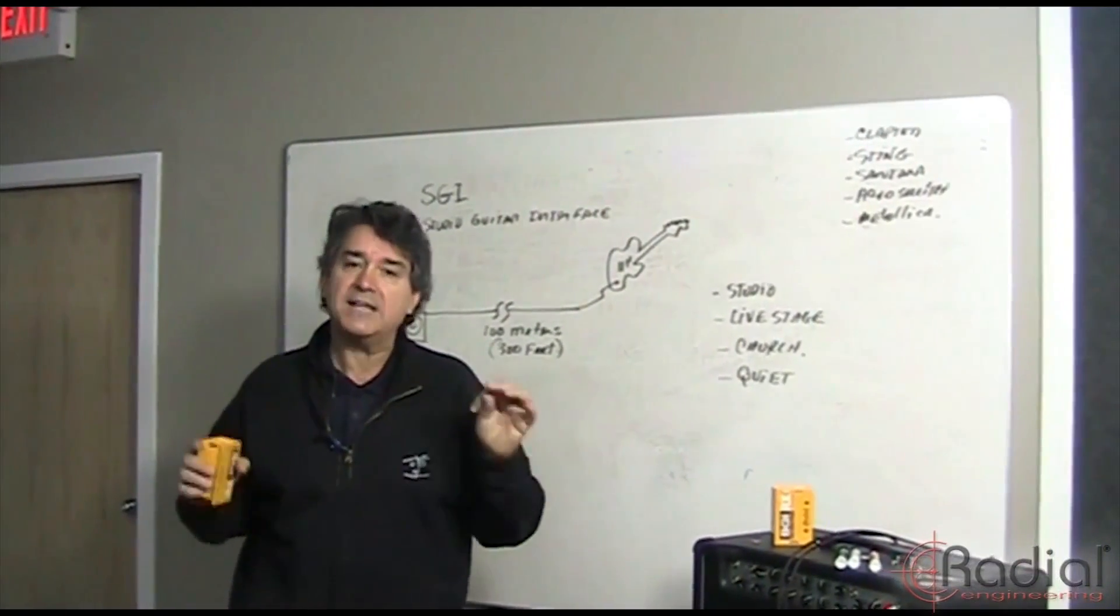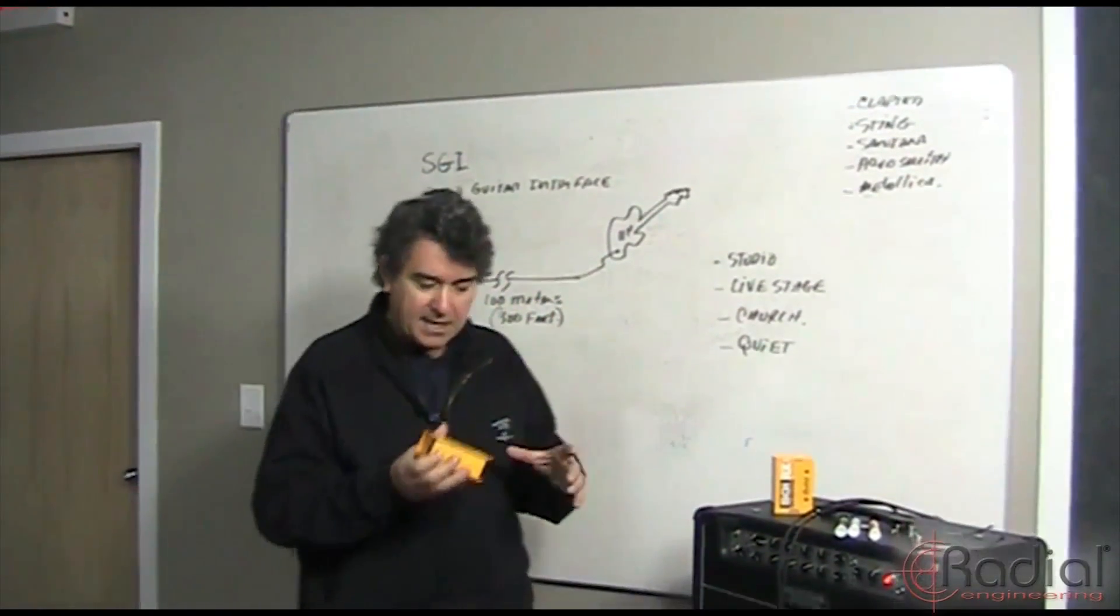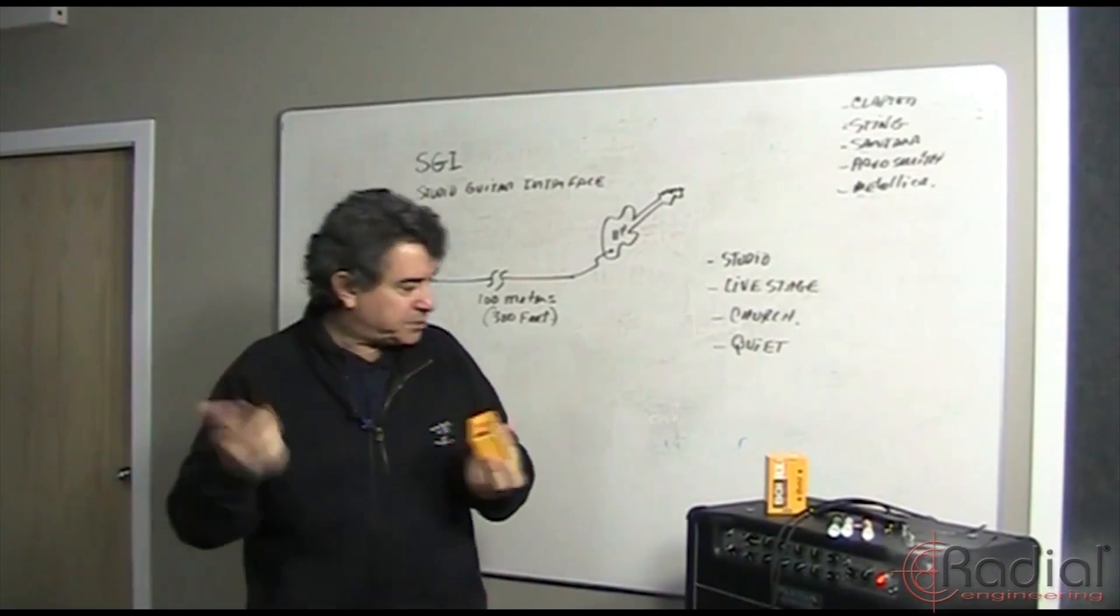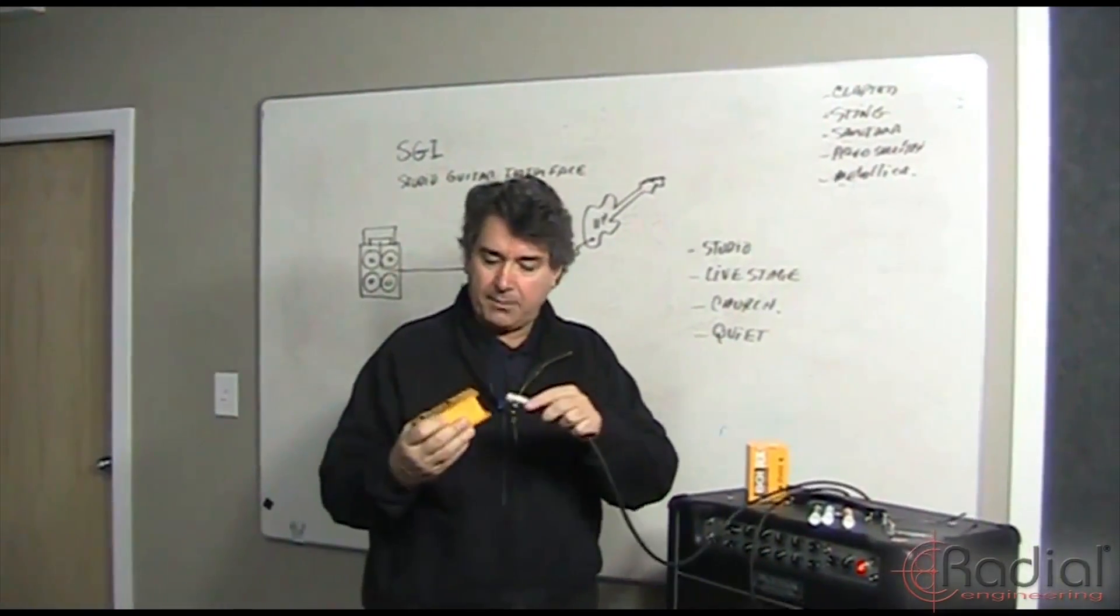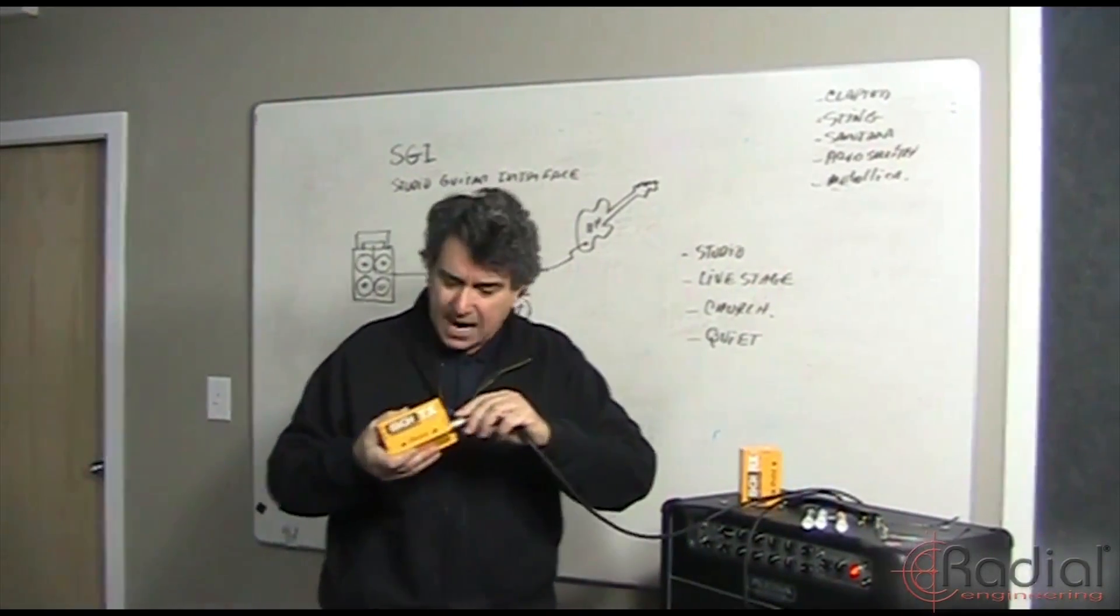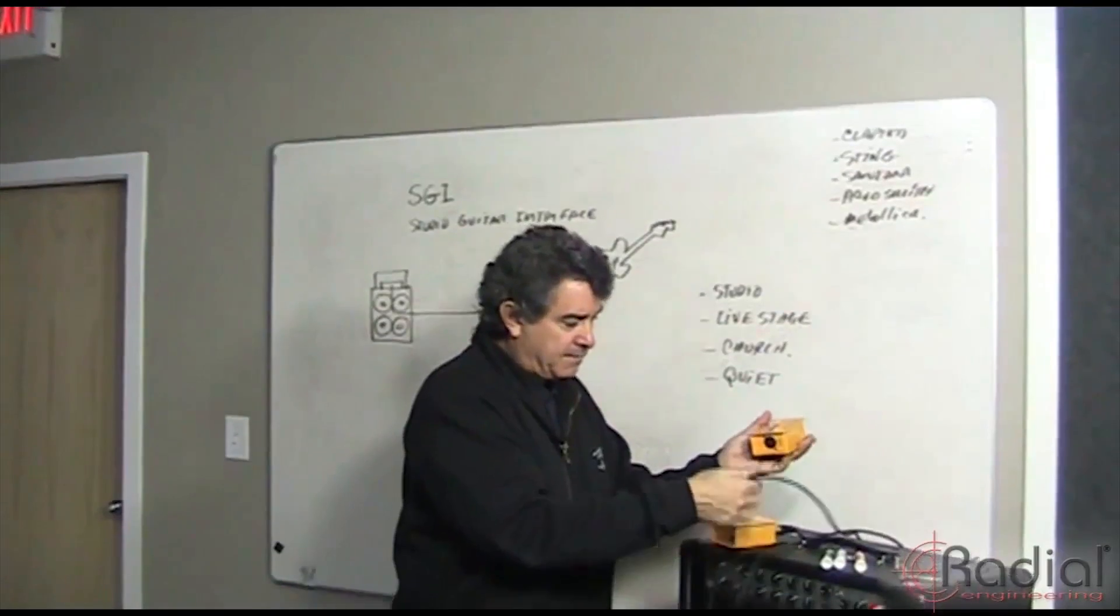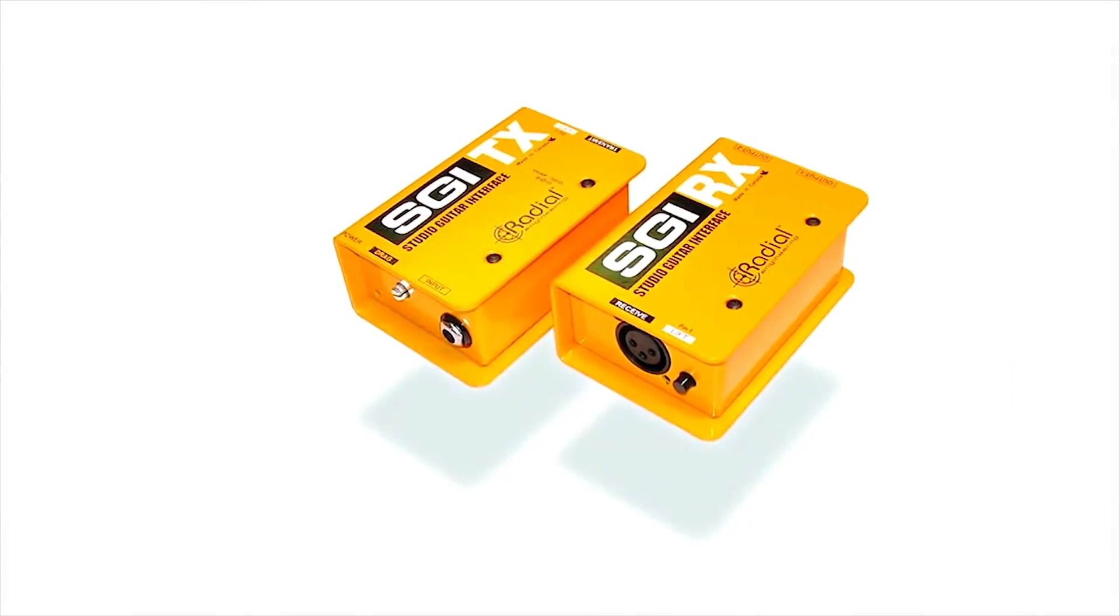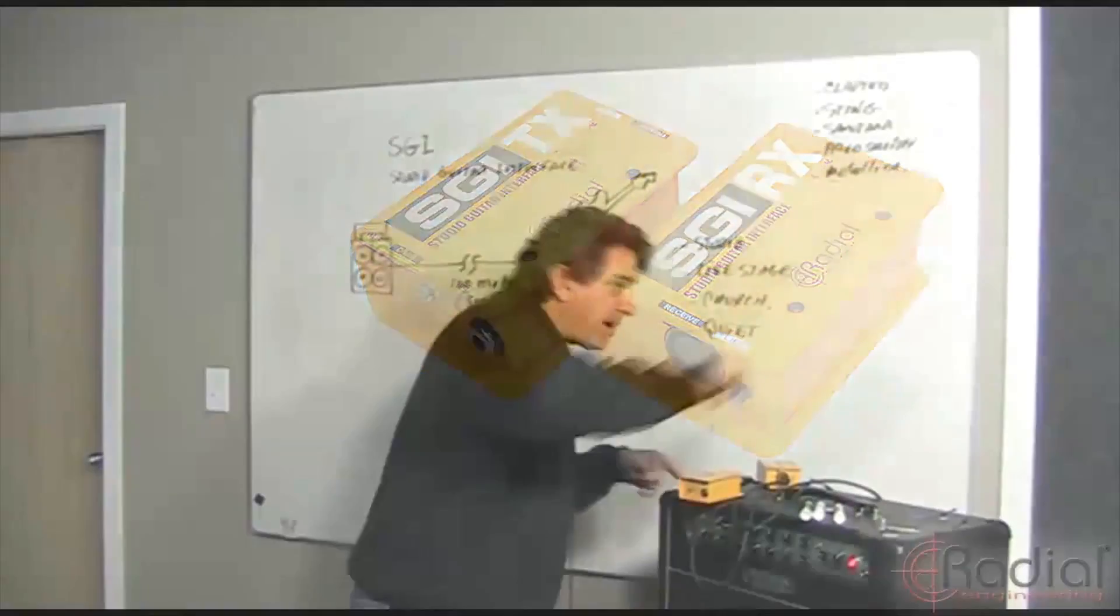What the SGI does—it's called the Studio Guitar Interface—is you plug your guitar in here, then you take a typical XLR cable. It works kind of like a DI box where you plug the XLR cable here and then the other end into the receive box. There's two boxes; when you buy it, it comes complete as a set. You run your guitar in here, then run it out